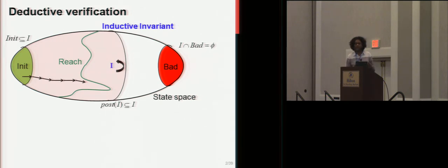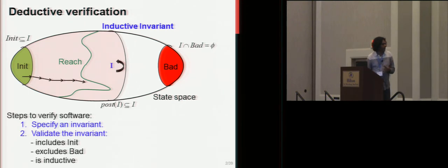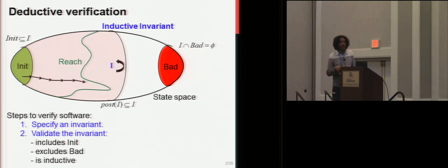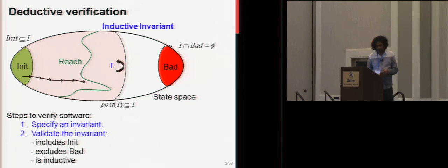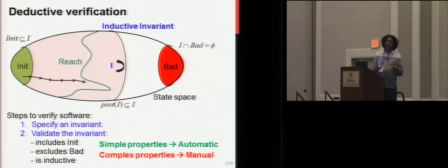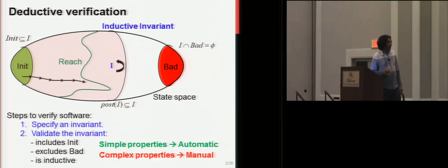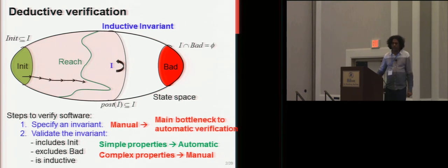When you verify software this way — and we have done projects where we actually built some mobile operating systems and verified code — what you have to do is go and sit in and do all these by hand. You have to specify loop invariants by hand, and you can validate the invariant using the toolchain. Once you write the invariants and they're strong enough, for simple properties the toolchain would work and you can usually prove it correct. But for more complex properties involving the heap and so on, it's still not clear how to do that automatically. Specifying an invariant is mostly manual today, and it's really the main bottleneck to automatic verification.